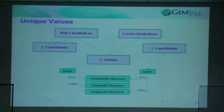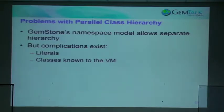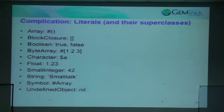One could generate a completely parallel hierarchy, but there are some problems. One is literals — when the compiler compiles literals, it assigns those literals to an existing class that the compiler and virtual machine knows about. Things like arrays, blocks, booleans, byte arrays, characters, floats, small integers, strings, symbols, and UndefinedObject are all known to the compiler, as well as internal support classes like Behavior, Class, Metaclass, Exception, Pragma, Process, and ProcessScheduler.